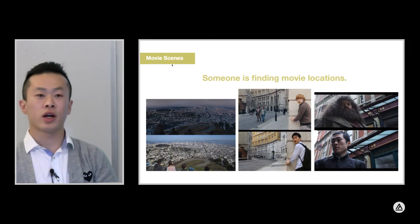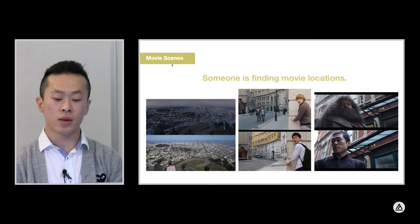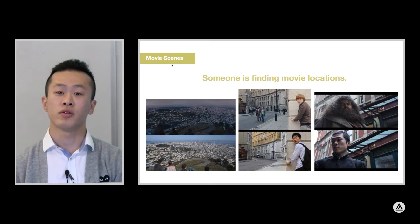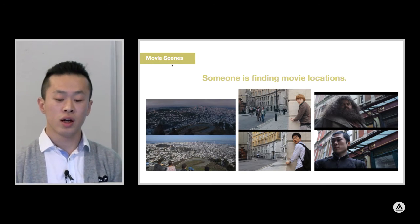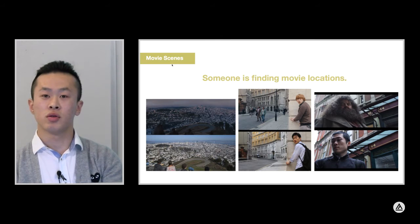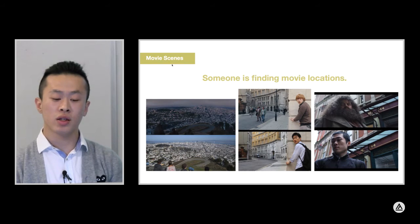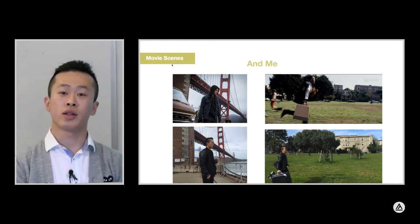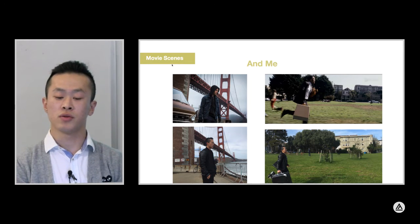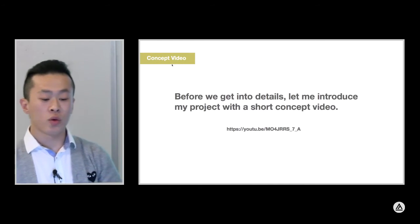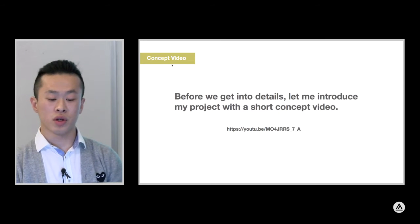Before I get into my project detail, I want to show you guys something. This guy is traveling around Europe to find movie locations in real life and trying to recreate them. As you can see, it's Harry Potter in the middle and also on the right. And guess what? He is not the only one doing this — also me. The left one is from the movie Ant-Man, and the right one is from a very classic movie filmed in San Francisco called The Pursuit of Happyness. Before we get into the detail, let me introduce my project with a short concept video.